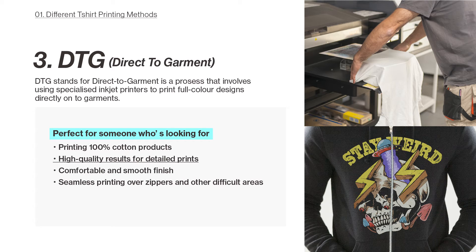DTG printing produces high resolution prints with vivid colours and sharp details, accurately reproducing complex designs, gradients, and photographic images for professional looking apparel. DTG prints also have a soft hand feel as the ink is directly absorbed into the fabric fibres, resulting in comfortable wear without the heavy plastic-like feel of some other methods. It also allows seamless printing over zippers and other difficult areas such as bumps in the pocket area or around the buttons.